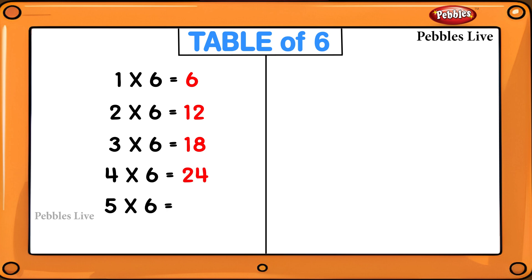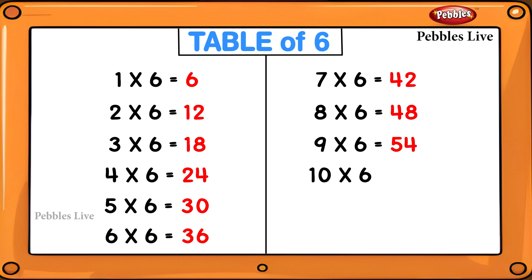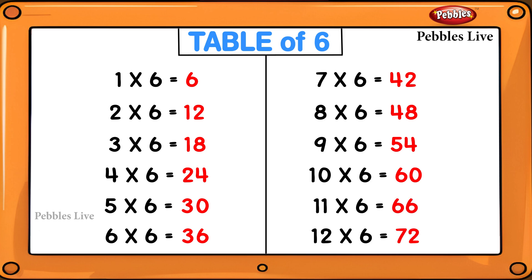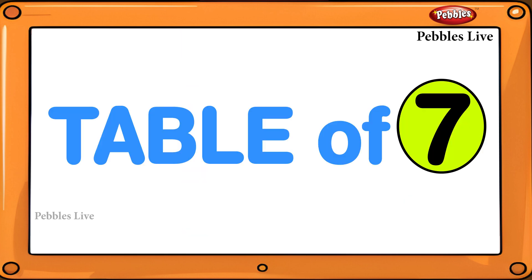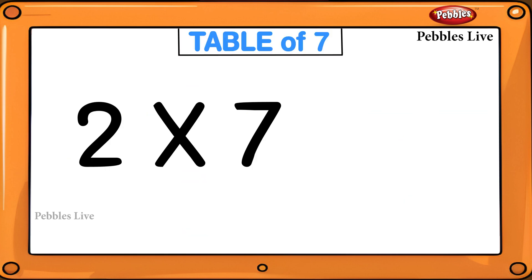5 six are 30, 6 six are 36, 7 six are 42, 8 six are 48, 9 six are 54, 10 six are 60, 11 six are 66, 12 six are 72. Table of 7: 1 sevens are 7, 2 sevens are 14.